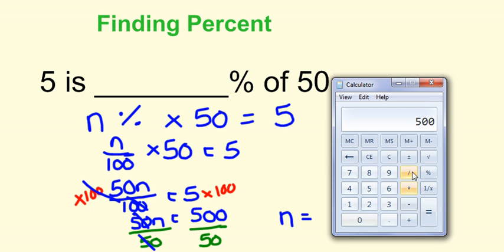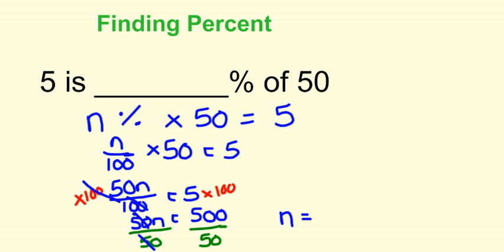So if you didn't know, you can put 500 divided by 50. And that is going to equal 10. So 5 is actually 10% of 50.